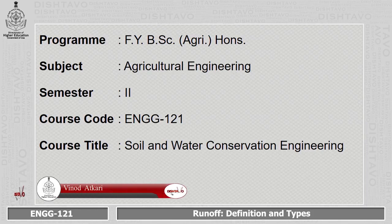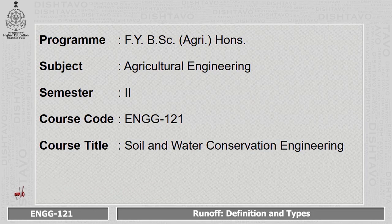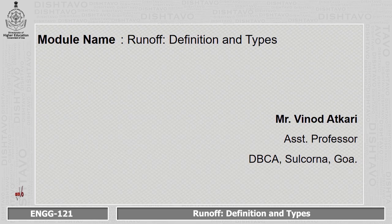Welcome all the students. Now we will discuss the twelfth module for the program First Year B.S. Agriculture Honors, for the subject Agricultural Engineering, second semester, Course Code Engineering 1-0-1. The title of the course is Soil and Water Conservation Engineering. The name of the module is Runoff: Its Definition and Types. I am Mr. Vino Datkari, assistant professor at Don Bosco College of Agriculture, Sulcorna, Cape Goa.